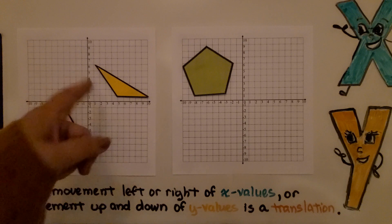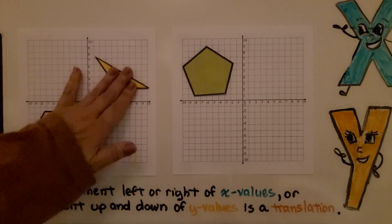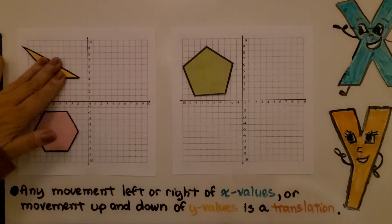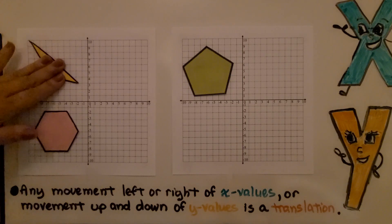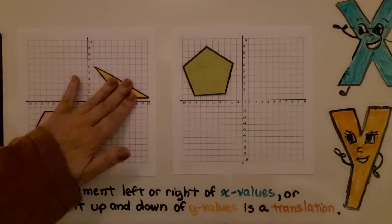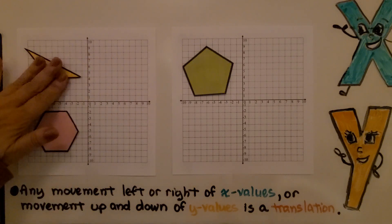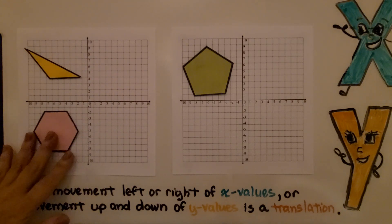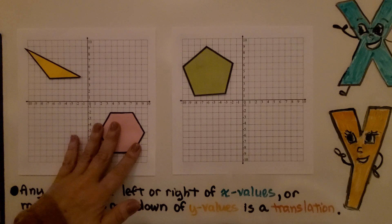Here we have a triangle. If I move it up and to the left, I've translated it. I didn't turn it, I didn't flip it—I just moved it like this, up and over. Same thing with this hexagon. I can move it across to the right and then up.